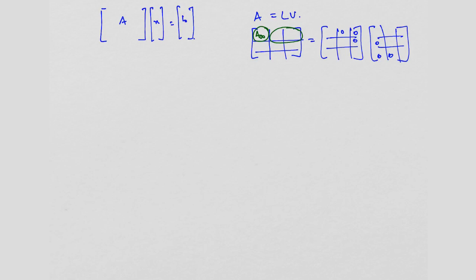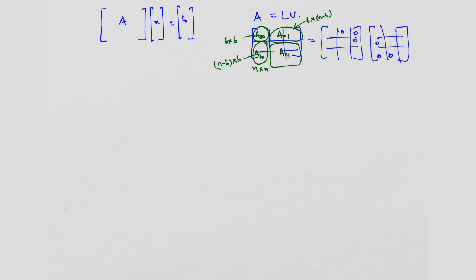I am going to call this sub-block A10. So what is the size of this sub-matrix? If this is an N-cross-N matrix, this block is B-cross-B. What is the size of this sub-matrix? It is B cross N-minus-B. I am going to call this A01. I am going to call this sub-block A10, which is of size N-minus-B cross B. And this remaining sub-matrix I am going to call A11, of size N-minus-B cross N-minus-B. So these are not sub-matrices of equal size.